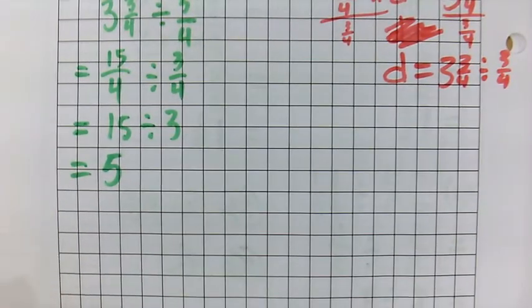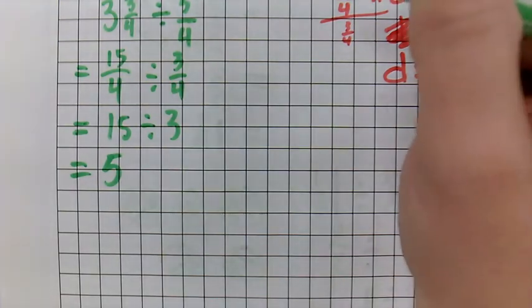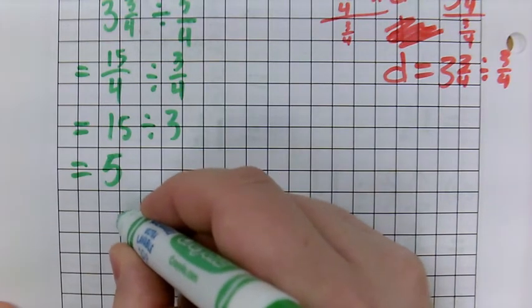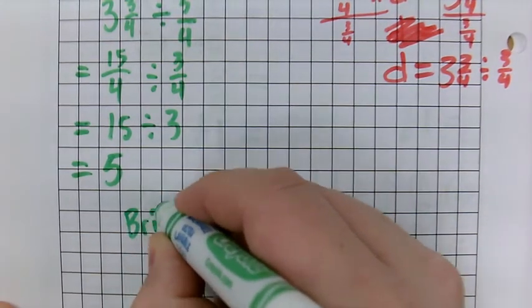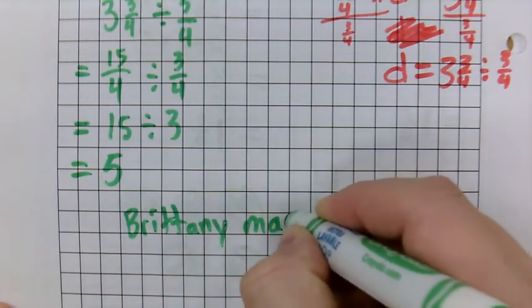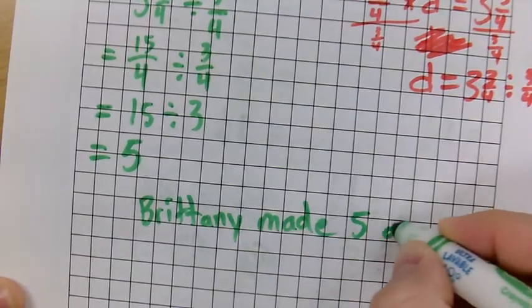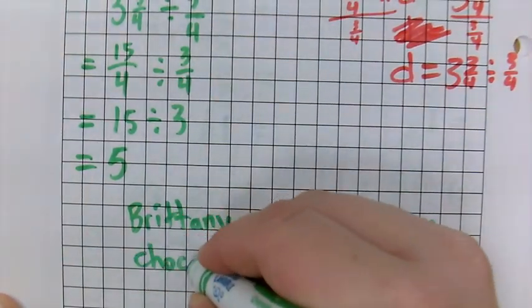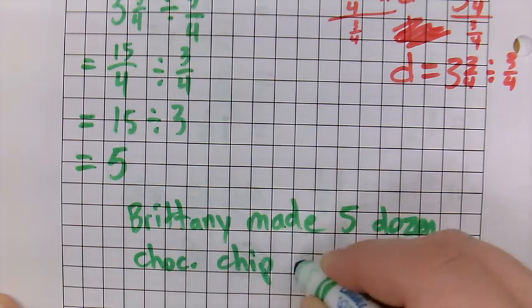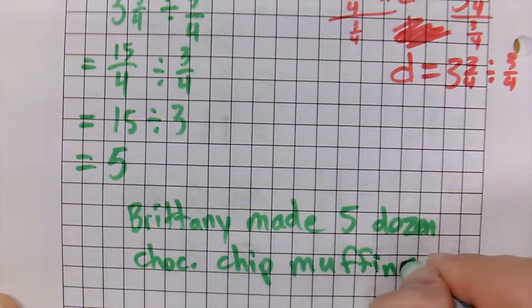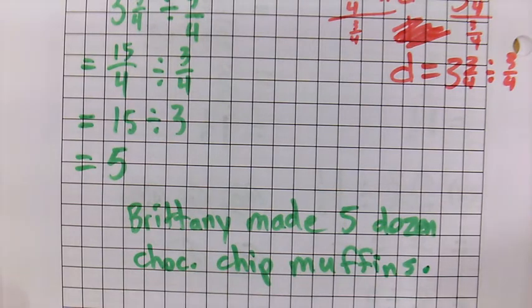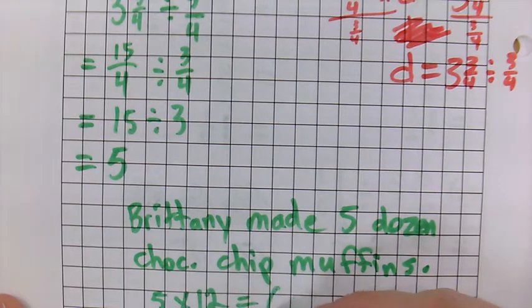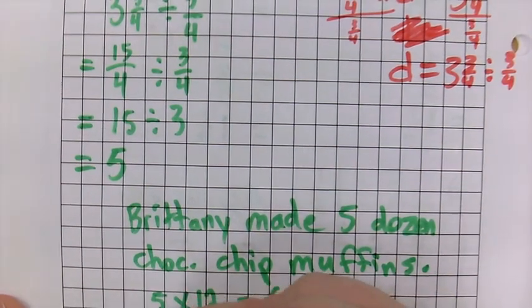Therefore, how many dozens, how many dozen muffins did she make? Brittany made 5 dozen chocolate chip muffins. Also known as how many? Well, 5 times 12, if you need to know exactly how many, 5 times 12 is 60. So, she made 60 muffins.